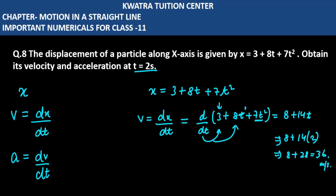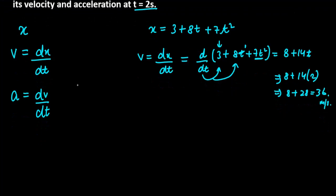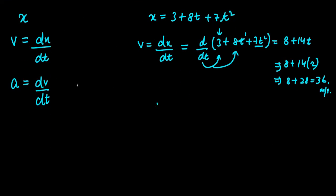Now we will find the acceleration. How will we find the acceleration? The velocity value you have already, which is 8 plus 14t. dv over dt. Take the derivative of velocity here.